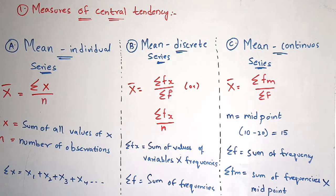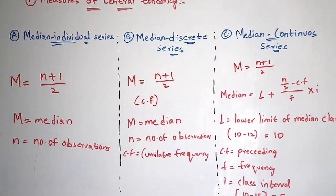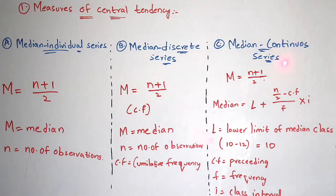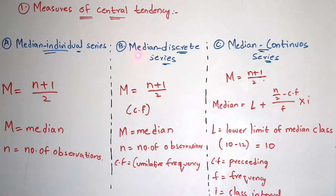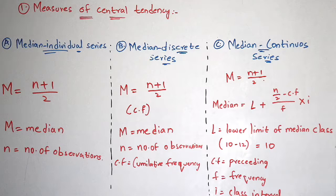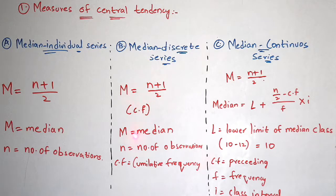Now let us discuss median — individual series, discrete series, and continuous series. The formula for median individual series is: M = (n + 1) / 2, where M is the median and n is the number of observations. For median discrete series, the formula is also M = (n + 1) / 2, but here you also have to calculate cumulative frequency (CF). Without calculating CF you cannot identify the value of n in this case.